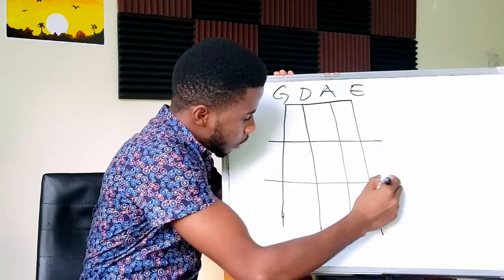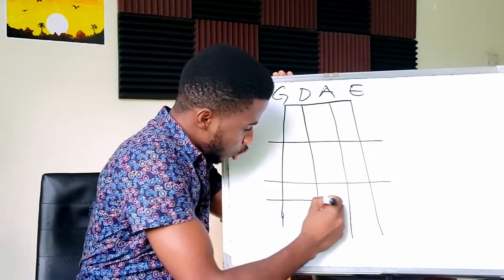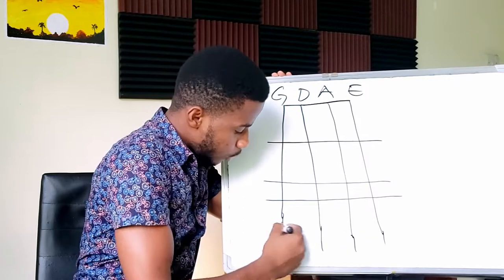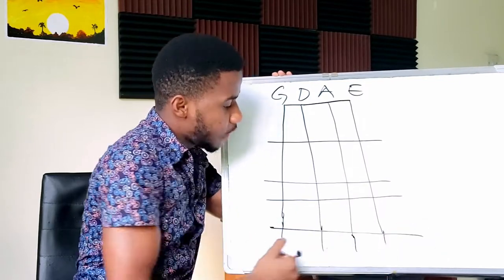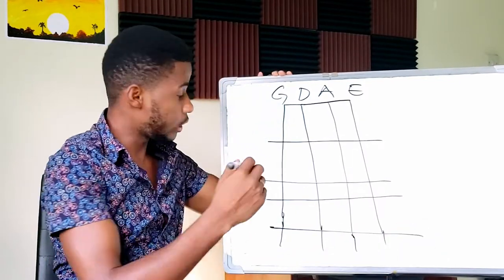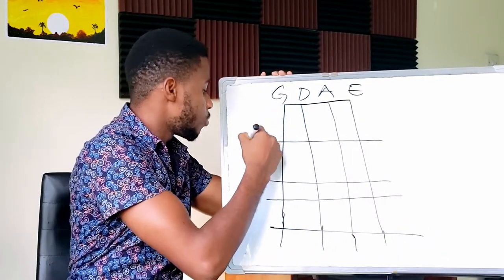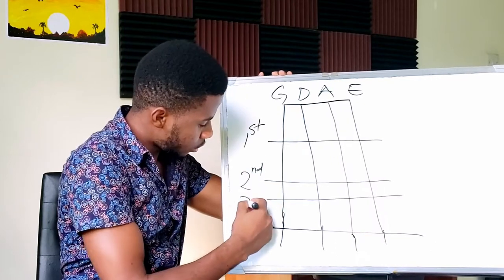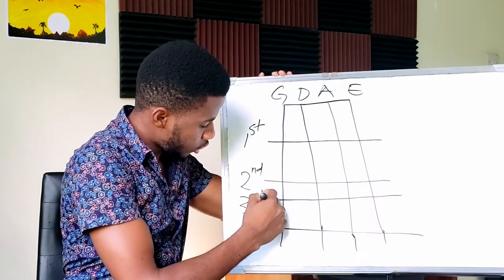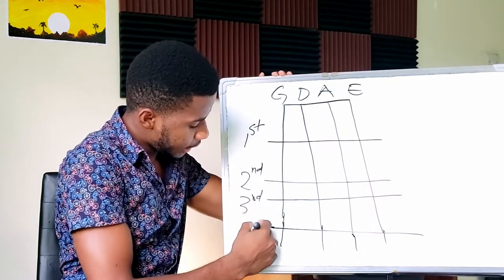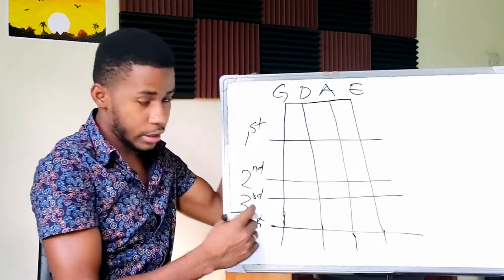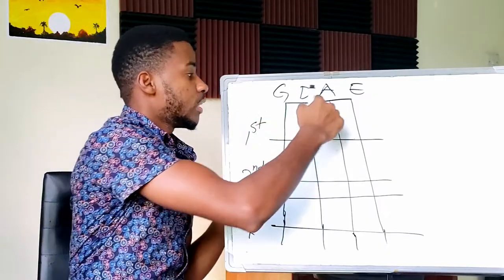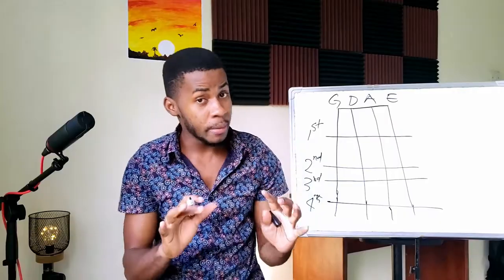Usually your teacher is going to put some tapes on the instrument to show you where the positions are. This first tape is going to be our first finger, then second finger, third, and then fourth finger.